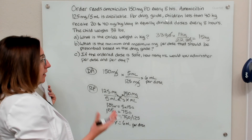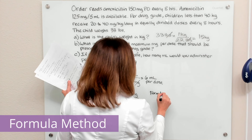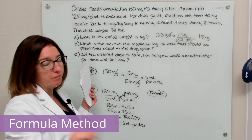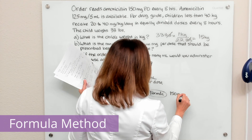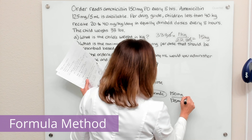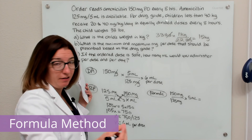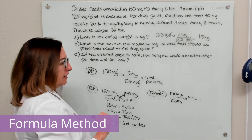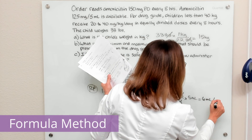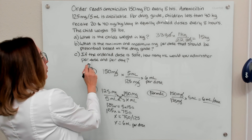Finally, we can also solve this problem with the formula method. The formula method is desired over have times the vehicle. Our desired is 150 milligrams; what we have is 125 milligrams in 5 mLs of solution, and that 5 mLs is the vehicle. Doing this math, we again end up with 6 milliliters per dose.